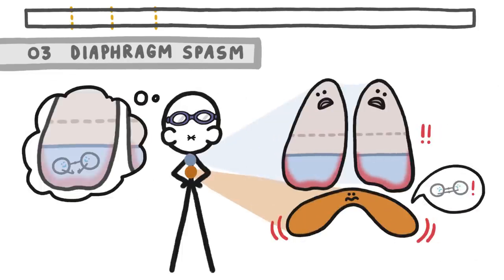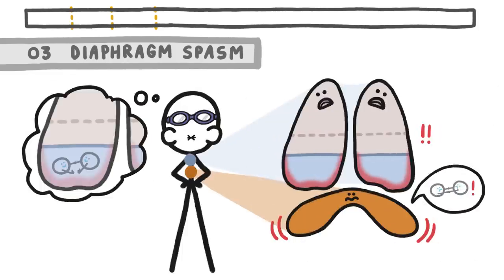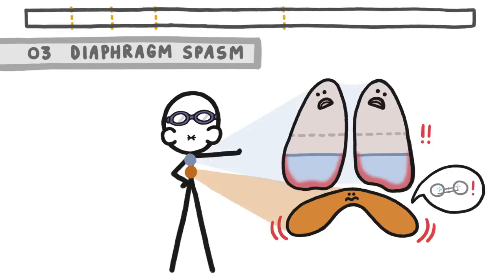But elite breath holders have figured out that at that point there's still some oxygen left, so they repeatedly ignore those spasms, which allows them to hold their breath for several more minutes. In fact, some of them have trained themselves to let their oxygen levels fall to just before it causes them to black out, before they finally gasp for air.